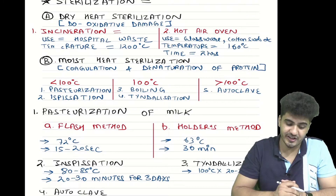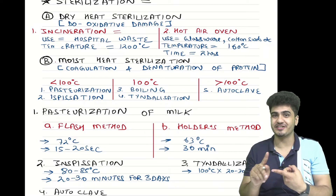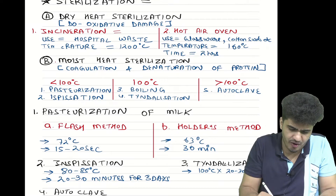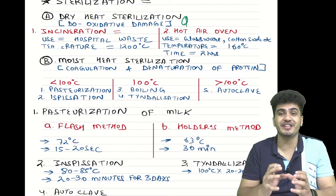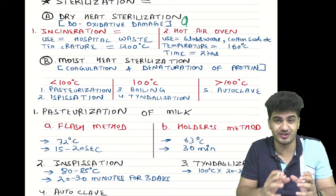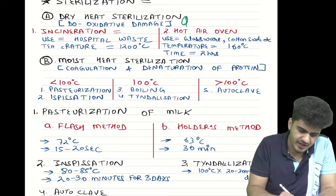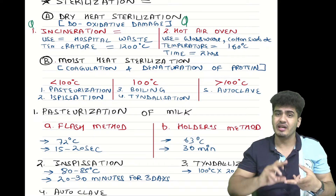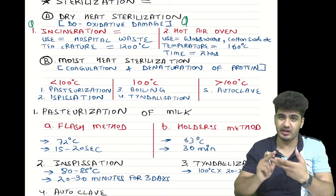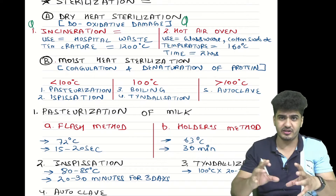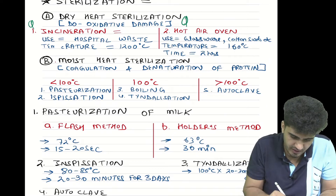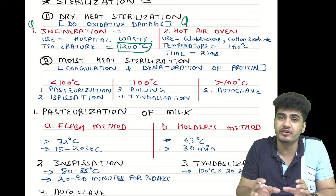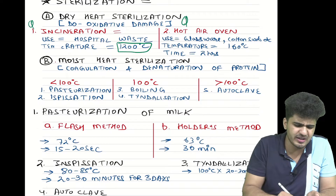Sterilization: dry heat sterilization and moist heat sterilization. For dry heat, the mechanism of action is oxidative damage. There are two methods in dry heat sterilization: incineration and hot air oven. Incineration is performed at 1200 degrees centigrade and is normally used for hospital waste.